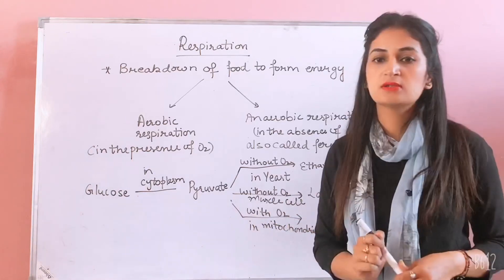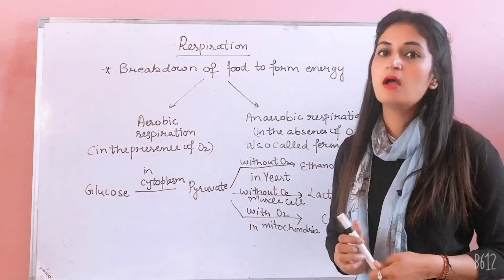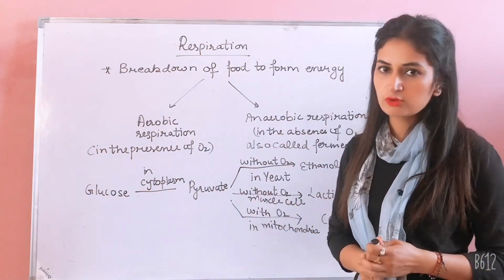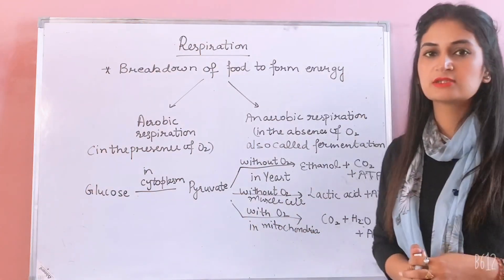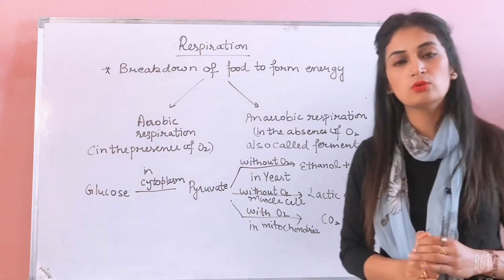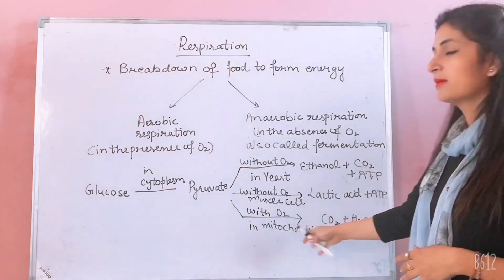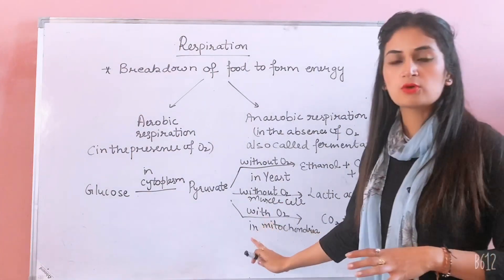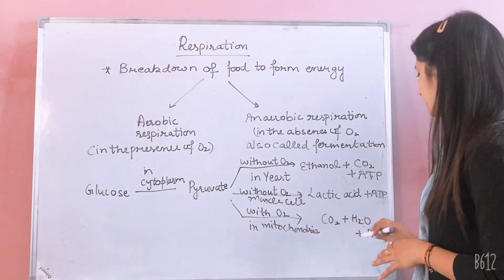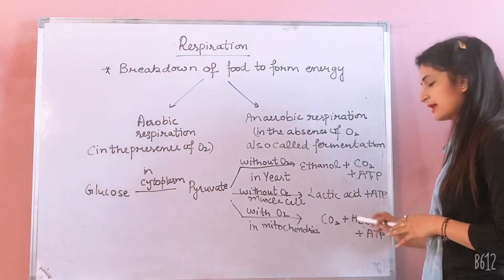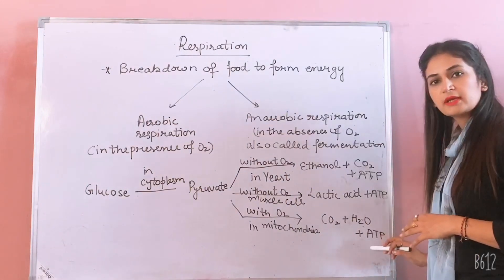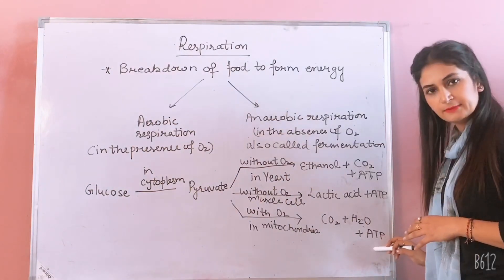With oxygen — that means in the presence of oxygen — this process occurs in the mitochondria. In the mitochondria, in the presence of oxygen, what are the byproducts? Carbon dioxide, water, and ATP.